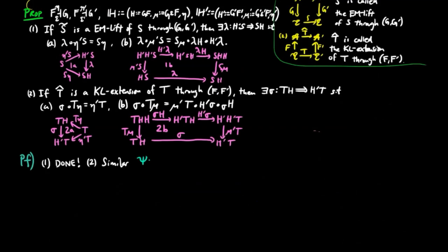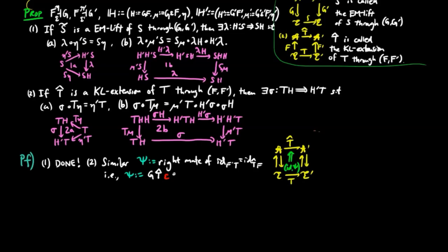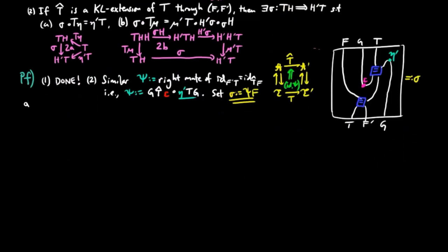2 is similar. We define Psi to be the right mate of the identity natural transformation from F'T to T'F. In other words, Psi is equal to G T'epsilon eta prime TG. And we set sigma to be Psi F, given by the following string diagram.